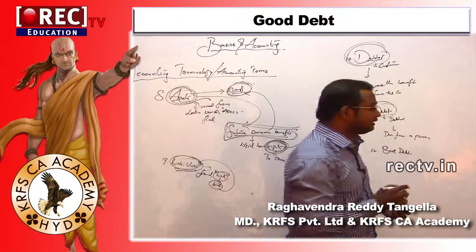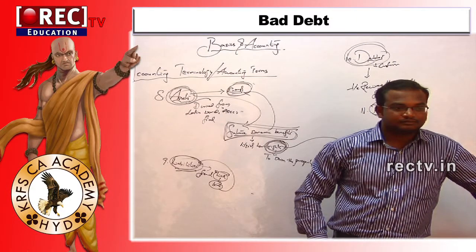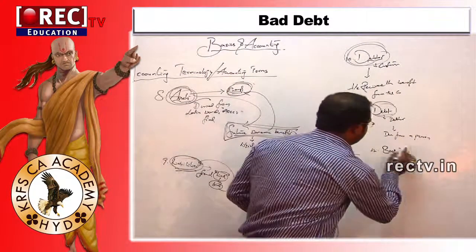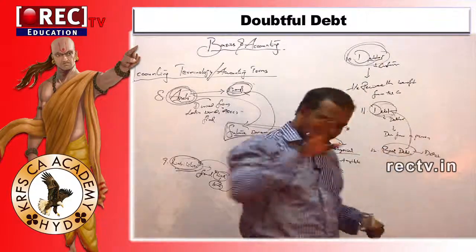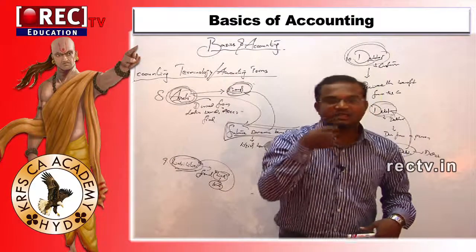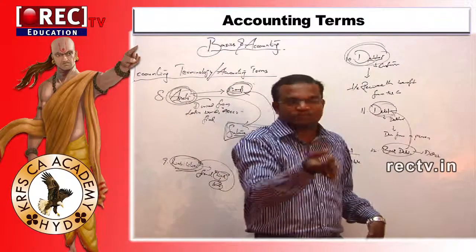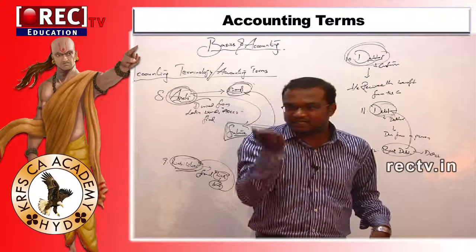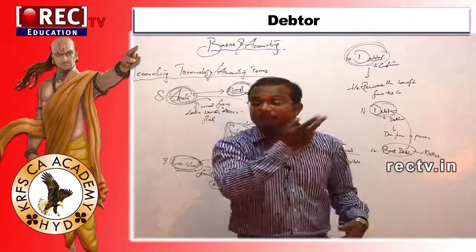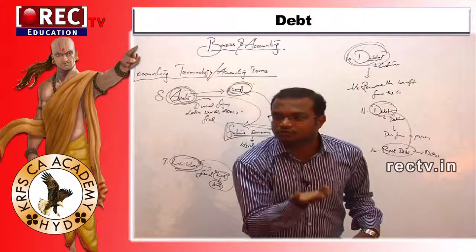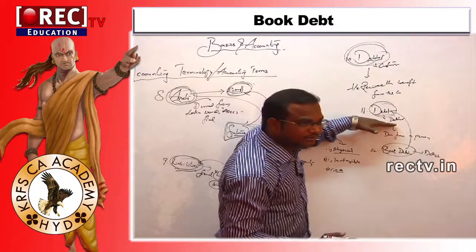What is meant by book debt? This is also called a debtor. For book purposes, we are entering a transaction — that is nothing but book debtor. In books we can see there is a debtor, so we use the term 'book debtor.' Over generations it has changed from book debt to debt to debtor — all referring to amount due to the business.